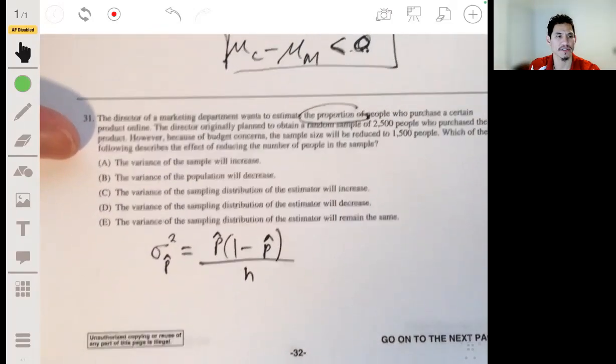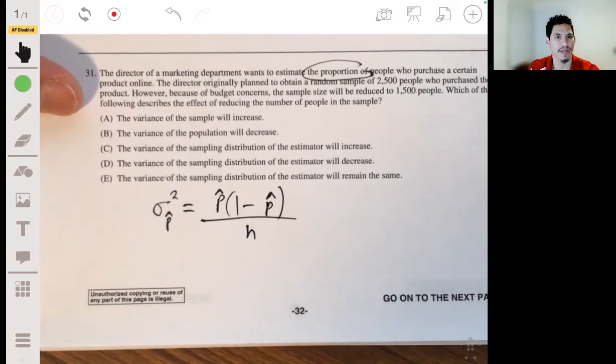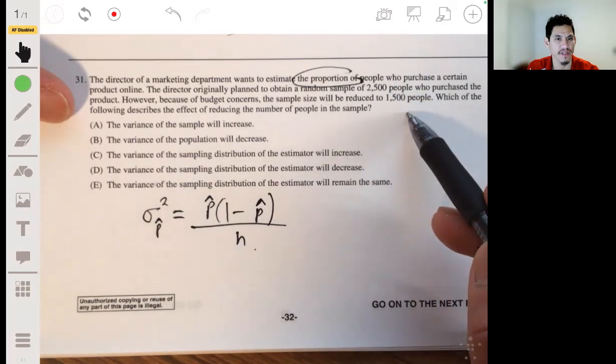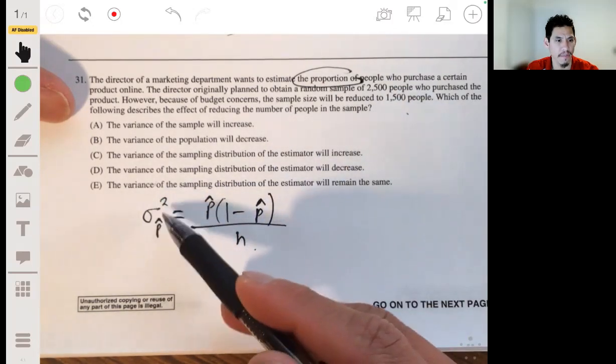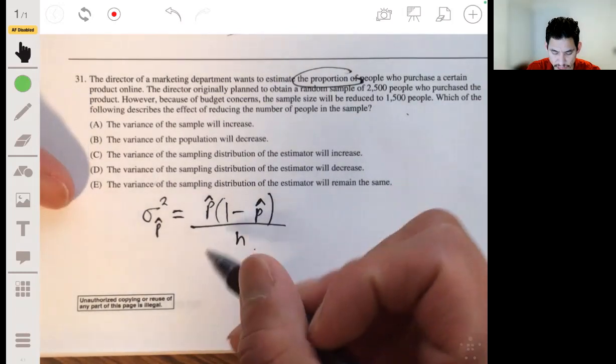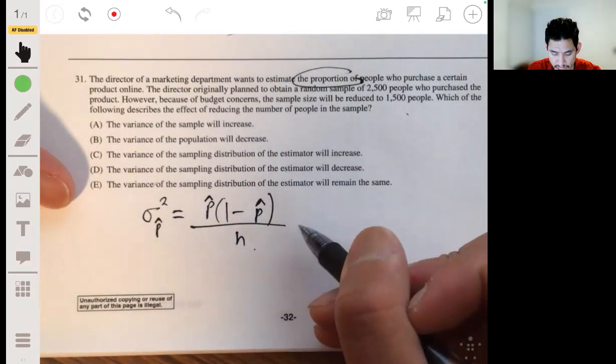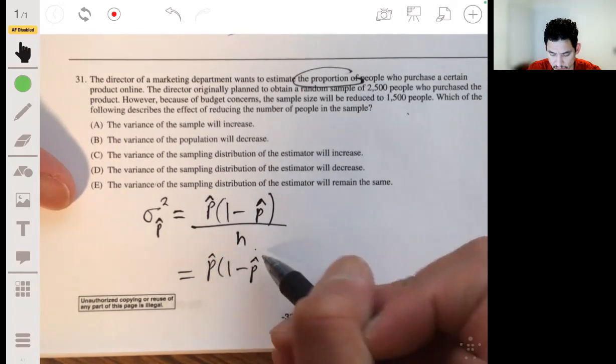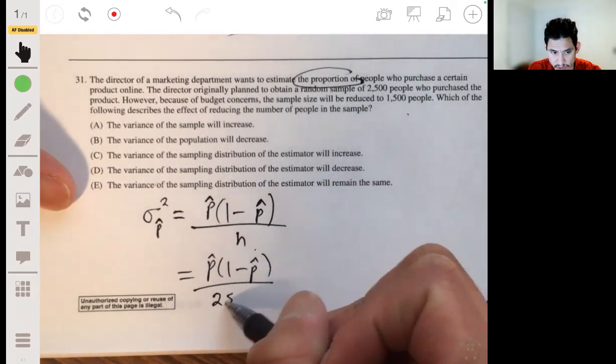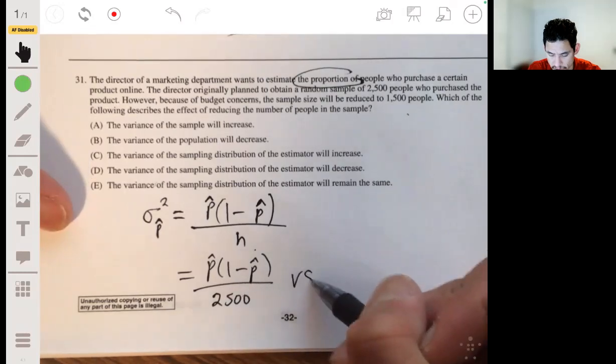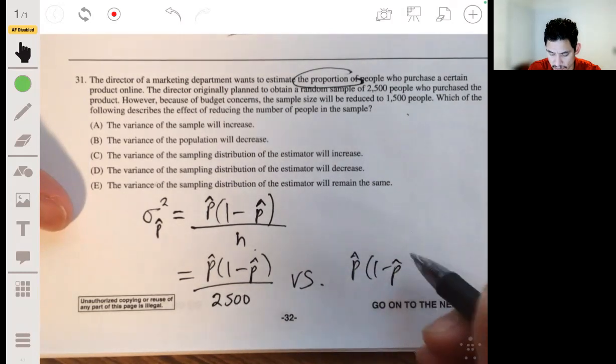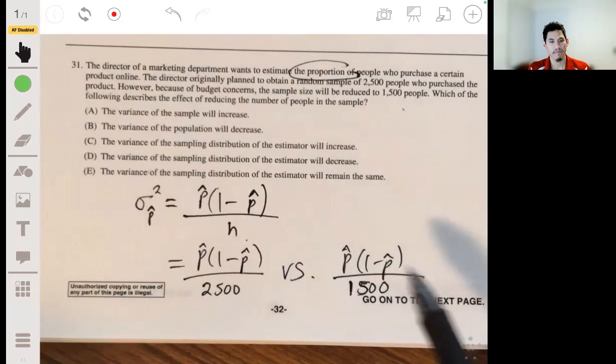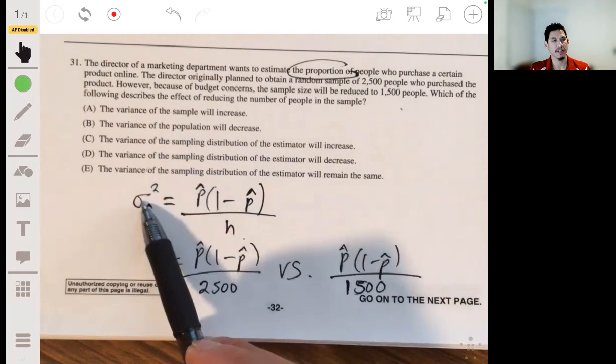So this would just be equal to p hat times 1 minus p hat over n. And so you want to see what would happen when we change the n from 2,500 to 1,500. What happens to this value? So in one case, we would have this being equal to p hat times 1 minus p hat over 2,500 versus p hat times 1 minus p hat over 1,500.